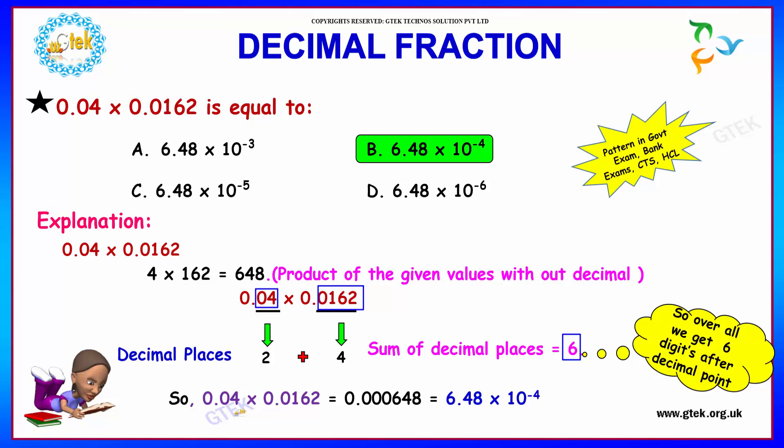Hence our final answer is located after 6 decimal places after the decimal point. So 648 is your final answer. It will be after 6 decimal places. That is 1, 2, 3, 4, 5, 6. Hence 6 places after the decimal point will be your answer, which is equivalent to 6.48 multiplied by 10 power minus 4. So our answer is option B.